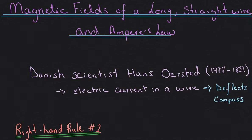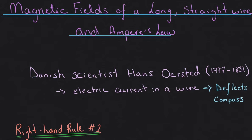For the last video on the chapter on magnetism, we're going to go over the material that relates to questions 5, 6, and 7 on the lecture worksheet. I am first going to introduce the magnetic fields of a long straight wire, then an application called levitating wires, and then we're going to find the magnetic field inside of a solenoid.